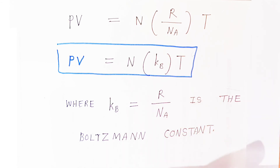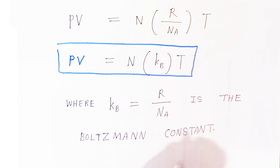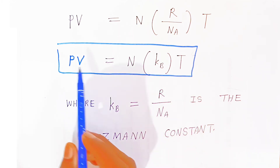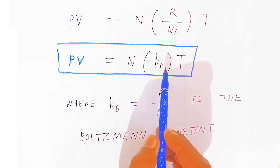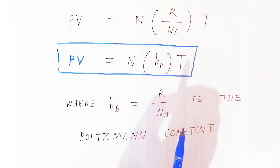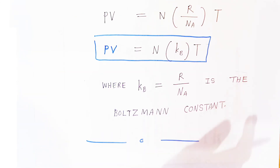This is very important for examinations — sometimes they ask you to derive the expression using the Boltzmann constant. So you write PV = NkBT, where kB = R / Nₐ. If you like this video, please share it and subscribe. Thank you very much. Have a nice day. God bless you.